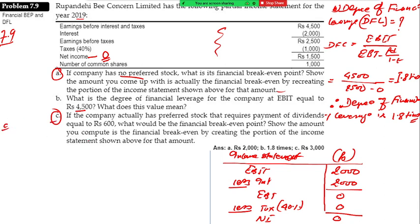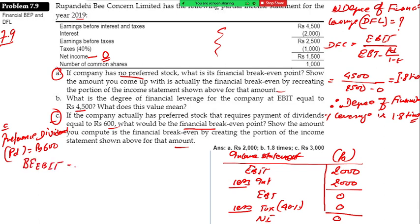Part C number: if the company actually has preferred stock that requires payment of dividend equal to six thousand six hundred — I mean, preference dividend has sevens of money. Period is equal to 600 rupees of money. What would be the financial breakeven point? The financial breakeven is created by the portion of the income statement.